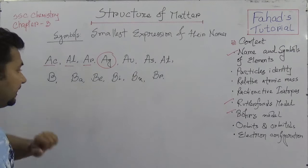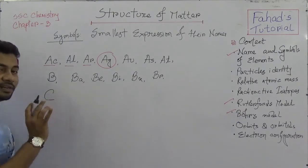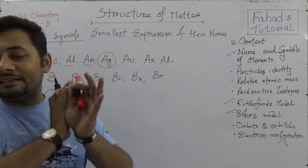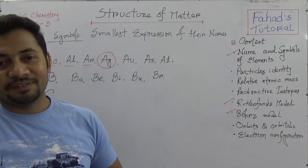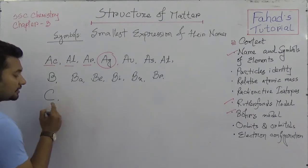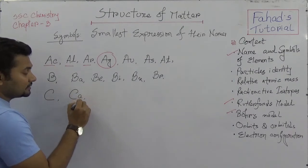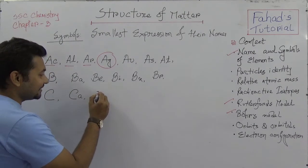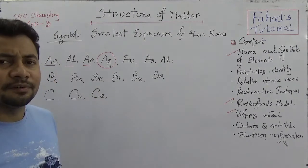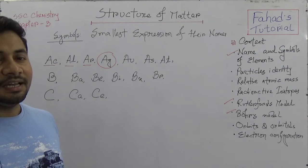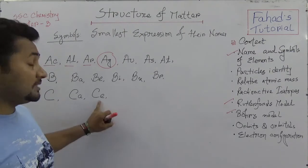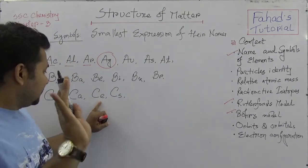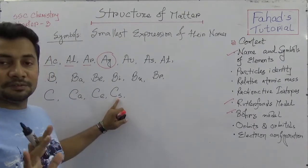C stands for carbon, CA stands for calcium, CE stands for cerium — sorry, my mistake — CE is cerium and CS is cesium. CU is copper, CR is chromium, CO is cobalt, and CL is chlorine.